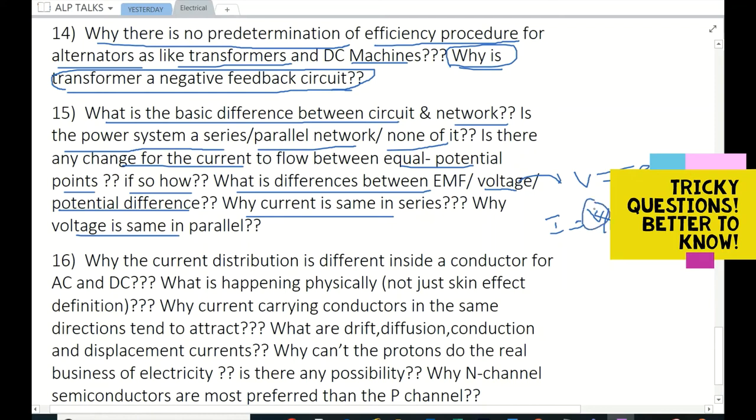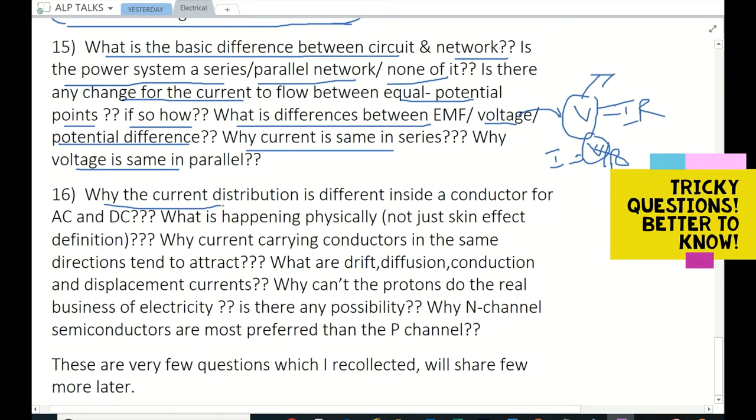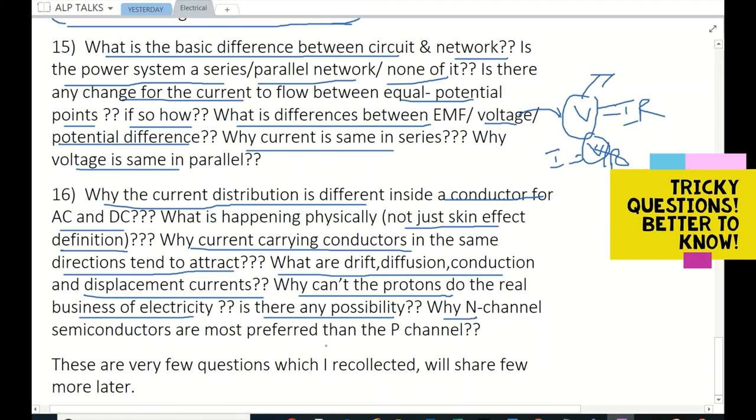Why is the current distribution different inside a conductor for AC and DC? What is happening physically, not just skin effect definition? Why do current-carrying conductors in the same directions tend to attract? What are drift, diffusion, conduction, and displacement currents? Why can't protons do the real business of electricity? Is there any possibility? Why are N-channel semiconductors most preferred than P-channel? Yeah, these are some very few questions, but there are many more questions.